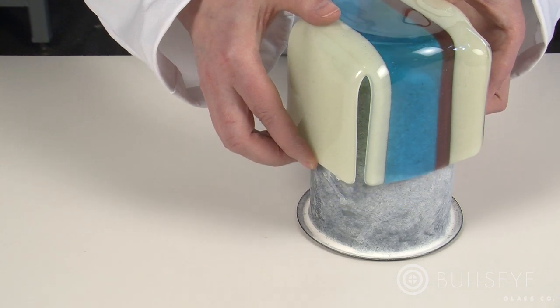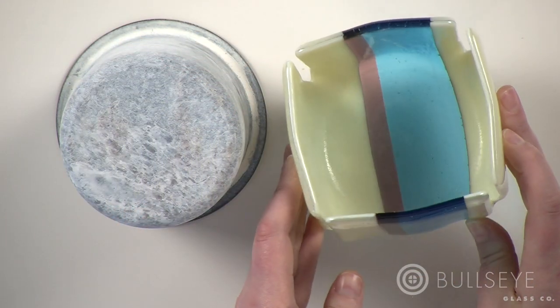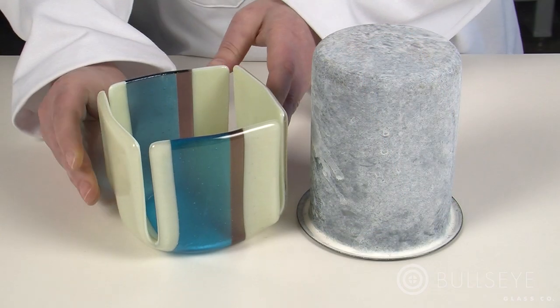Stainless steel molds expand and contract more than glass as they are heated and cooled. They are generally best suited for slumping over.